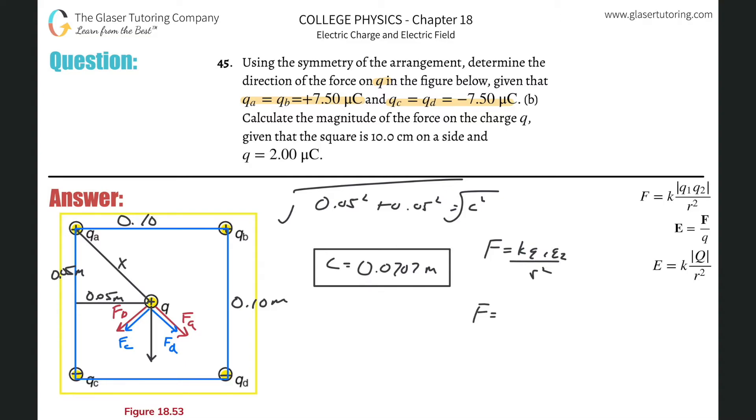So we're going to have force is equal to K Q1 times Q2 all over the distance between them squared. So K is a constant, 8.99 times 10 to the ninth times Q1. So we'll call that QA, that's going to be 7.5 times 10 to the minus 6th times then the Q value is 2 times 10 to the minus 6th. We need those in coulombs and then divide that whole thing by the distance between them. That's what we just found squared. So 0.0707 squared.